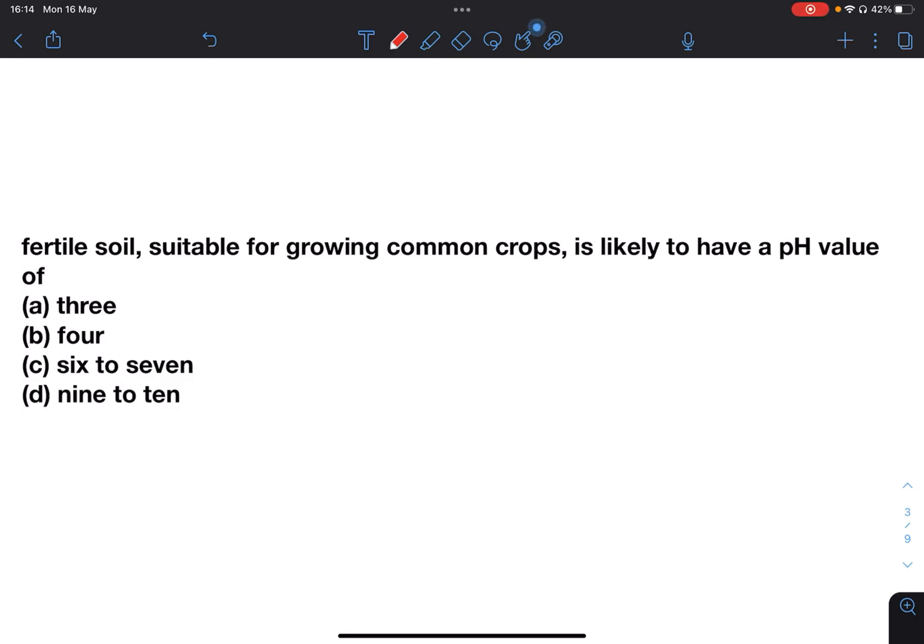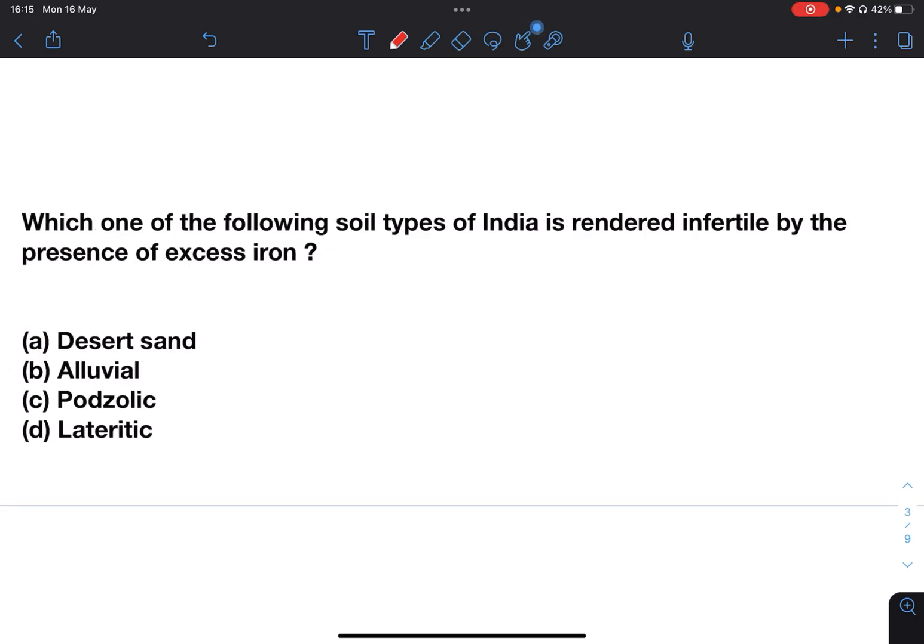Next: Which one of the following soil types of India is rendered infertile by the presence of excess iron? Desert soil, alluvial, podzolic, or lateritic? Answer is D, lateritic. The laterite soil has excess of iron, and aluminium is also present in laterite soil.